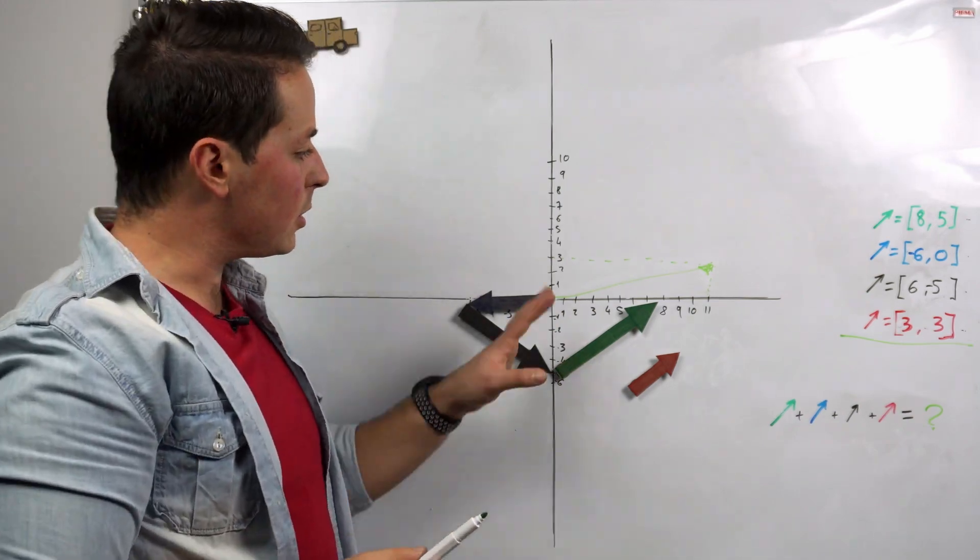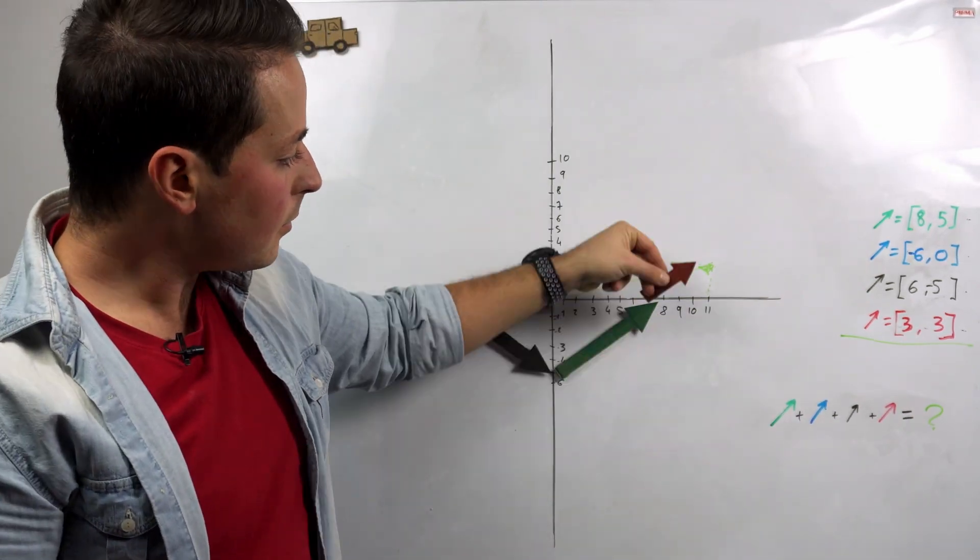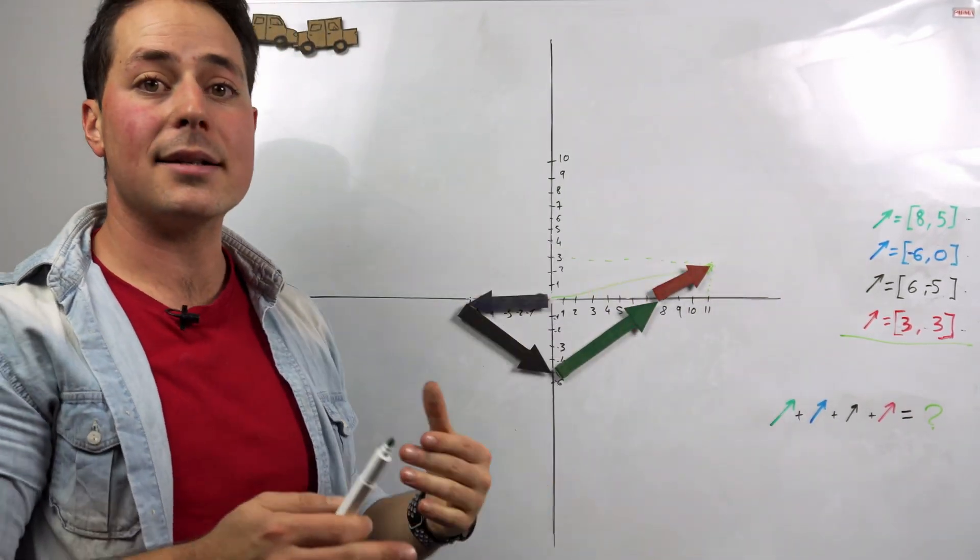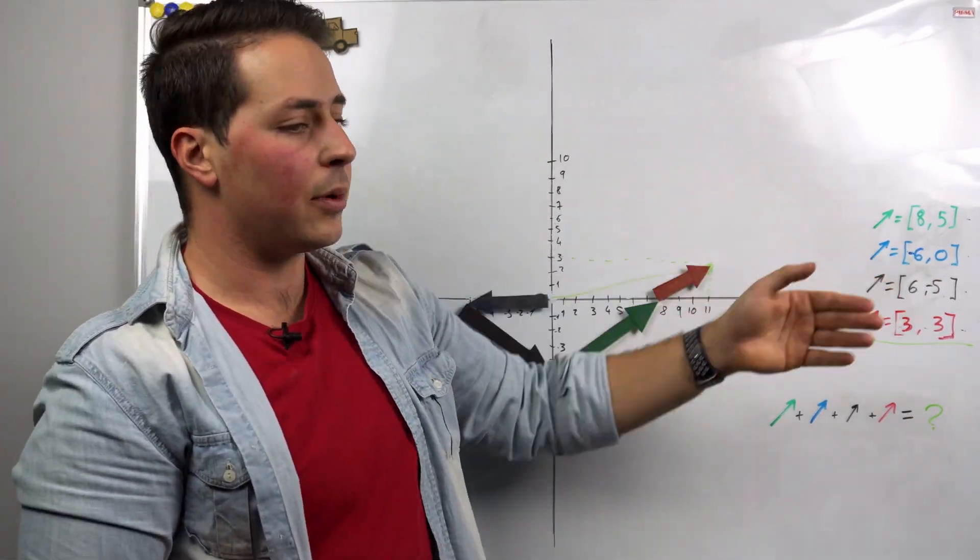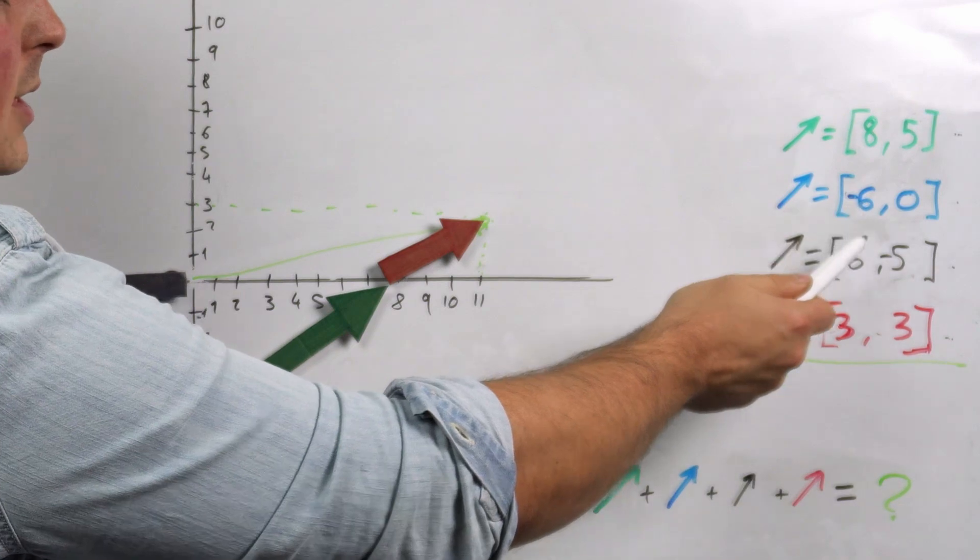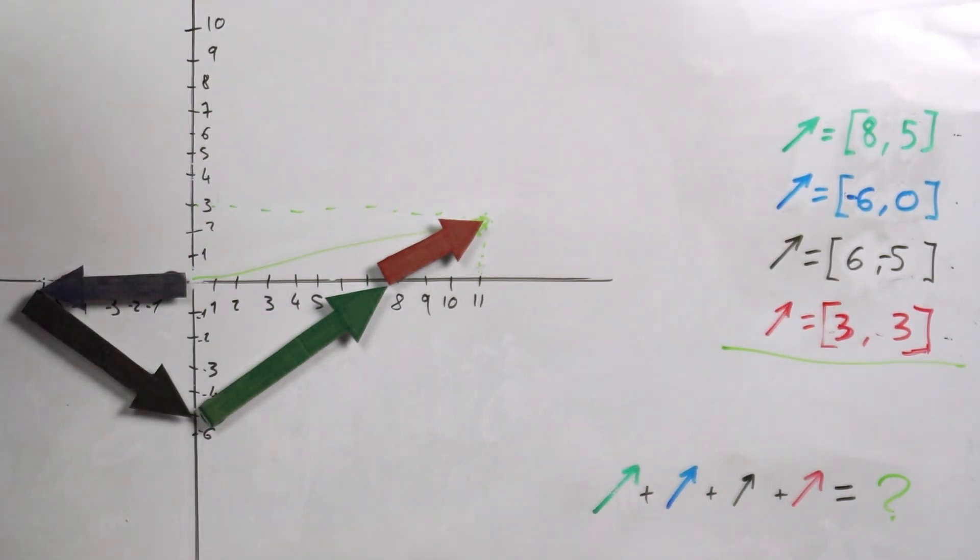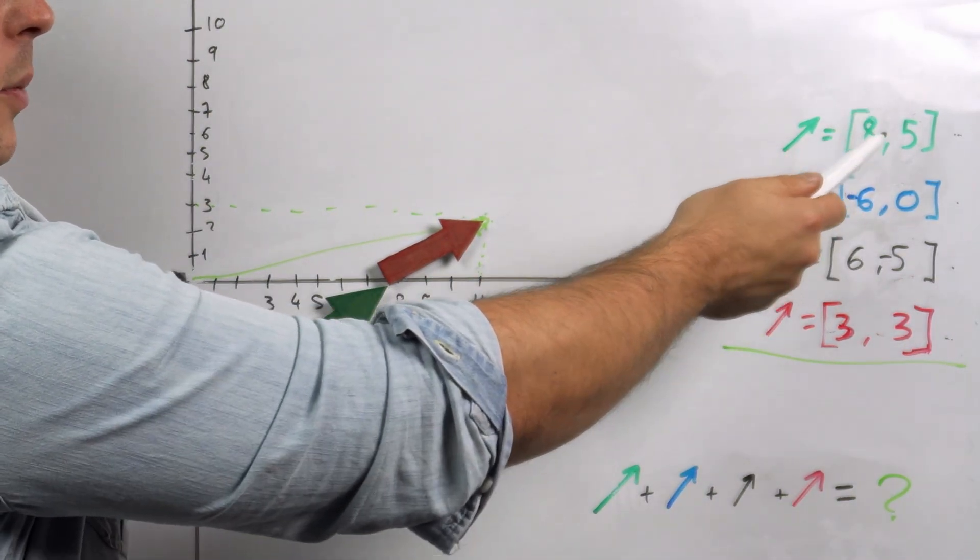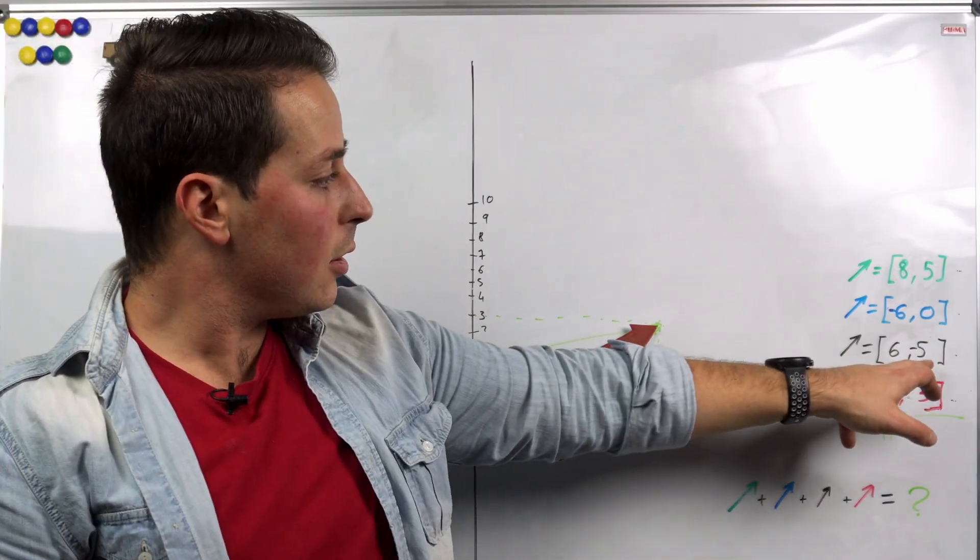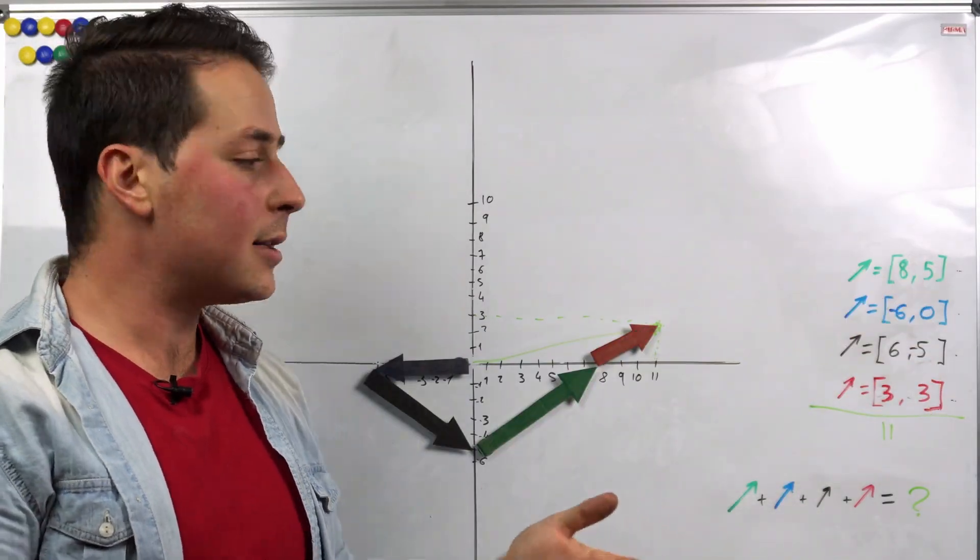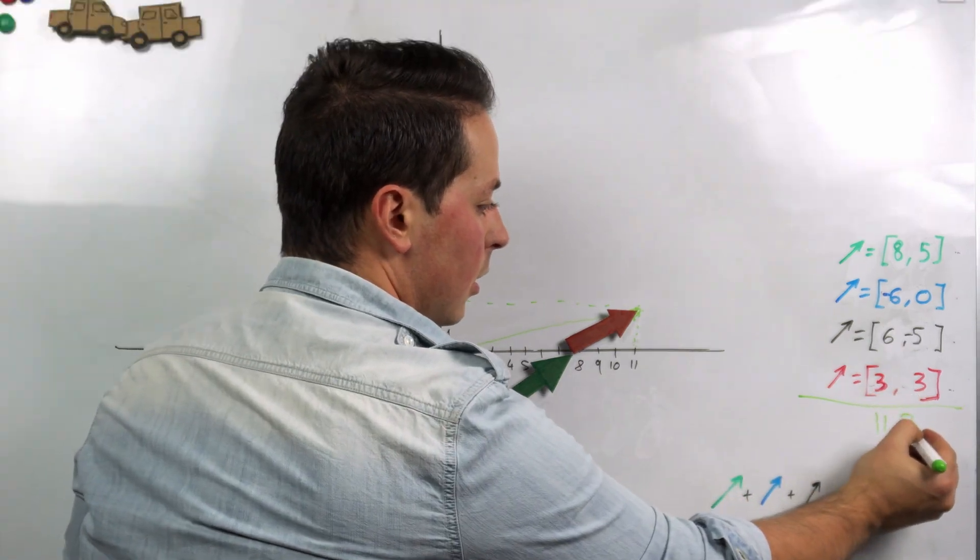But if you realize, when I was doing all these things, what I was actually trying to do is cancel the coordinates so they are very small. And we can do the same just looking at the numbers and the components. -6 and 6 goes to zero, so I am left only with 8 and 3, which gives me 11. Same thing goes with -5 and 5. They cancel each other out and I'm left with a 3.